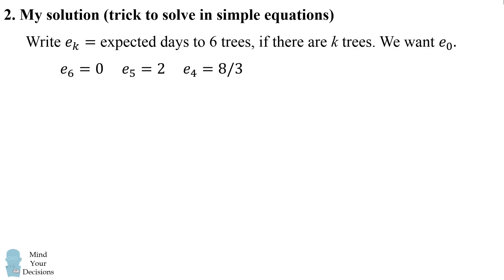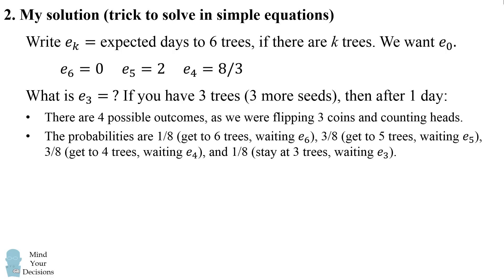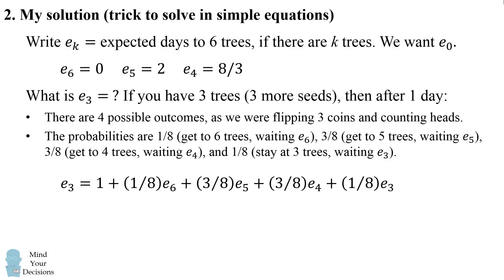Continuing, e_3 has three remaining seeds — like flipping three coins and counting heads. The four outcomes (0, 1, 2, or 3 heads) have probabilities 1/8, 3/8, 3/8, and 1/8 respectively, landing us at three, four, five, or six trees. Writing out the equation for e_3 and substituting the known values of e_6, e_5, and e_4, we solve to get e_3 = 22/7.